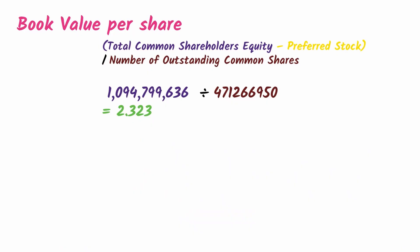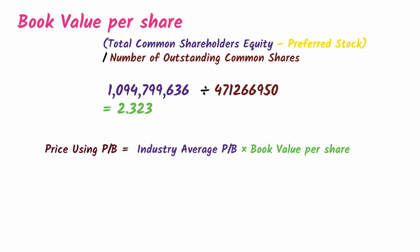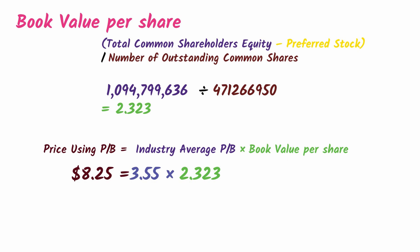As mentioned, you can avoid doing all of this manually, because you'd also need the PB for all the other manufacturing industry companies. Just sign up with Infomasters or use the Mayberry tracker — whichever you're more comfortable with. The price using PB equals industry average PB multiplied by book value per share: 3.55 × 2.323 = $8.25. So using price-to-book, Honey Bun is trading slightly below fair value.